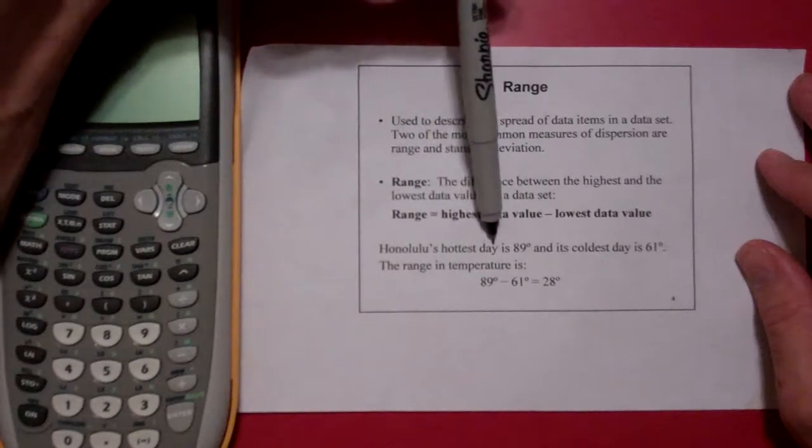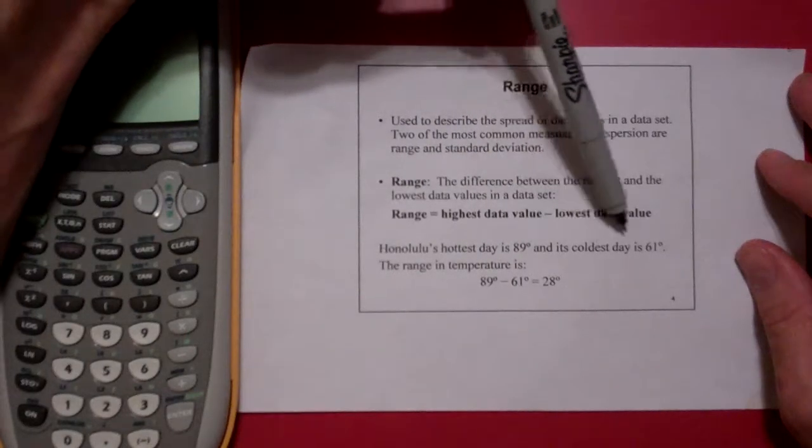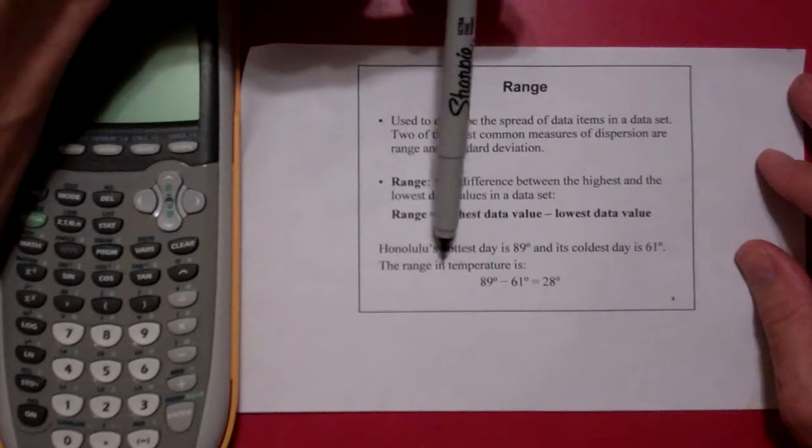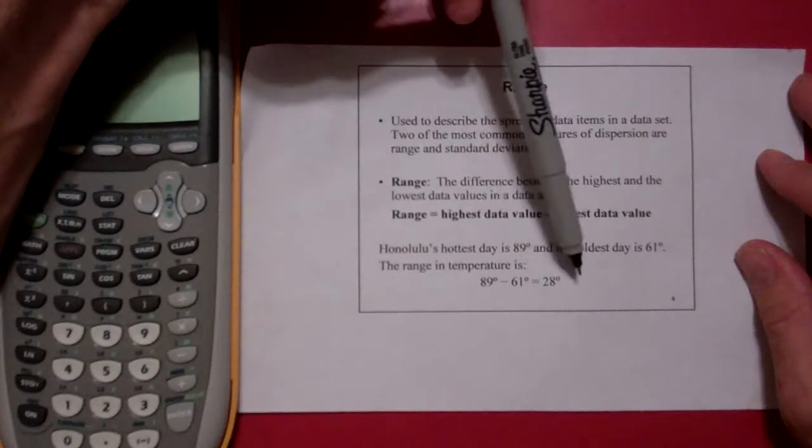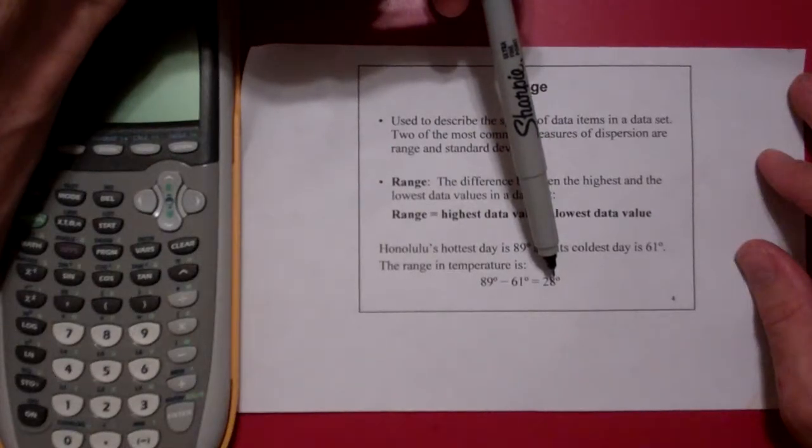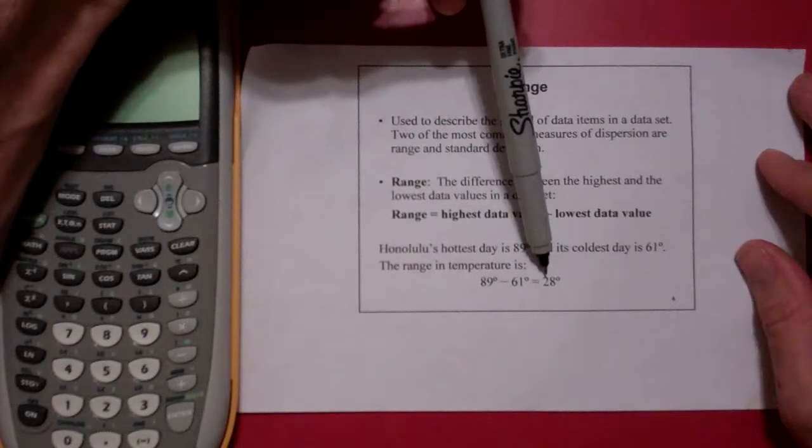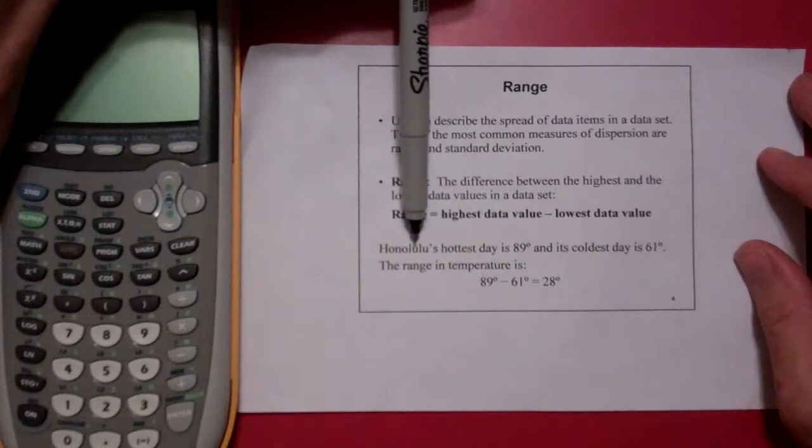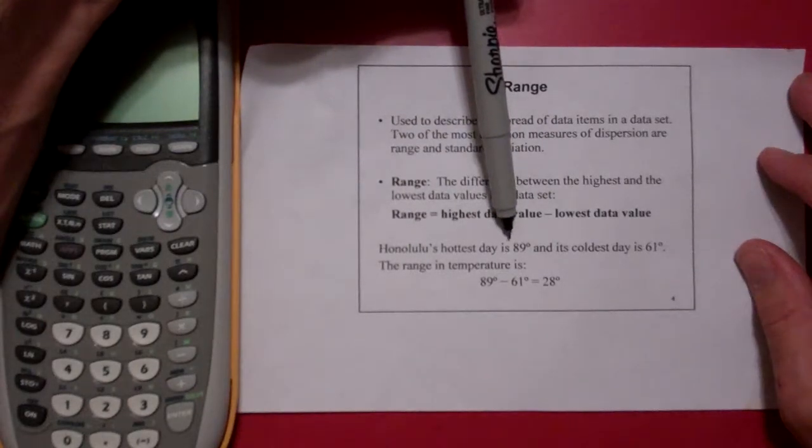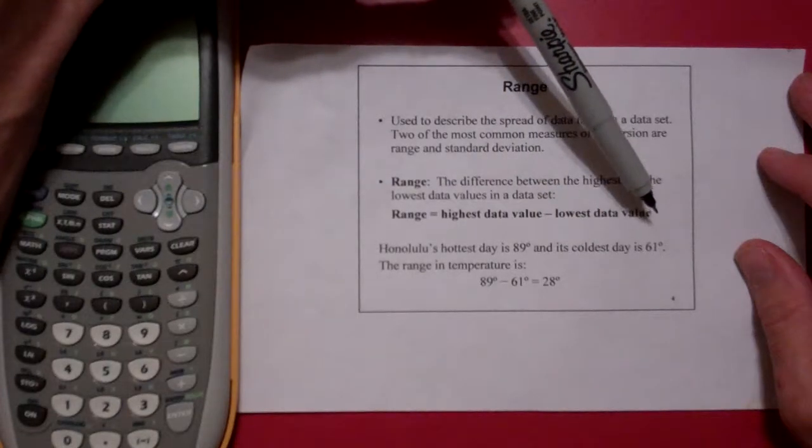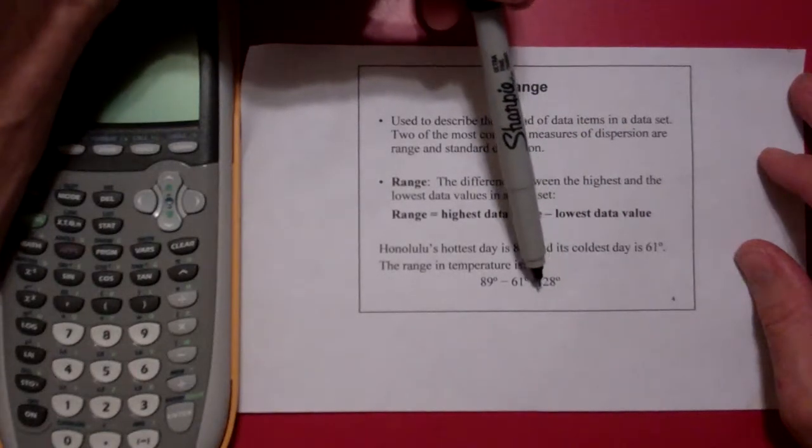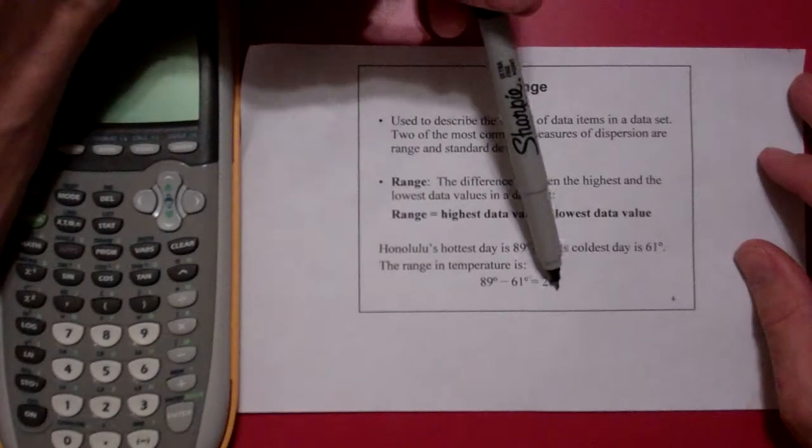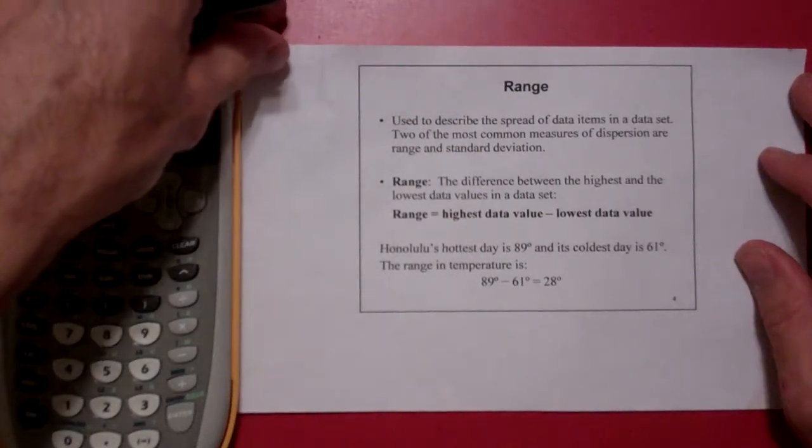So Honolulu's hottest day is 89 degrees and its coldest day is 61 degrees. So the range in temperature is 89 minus 61, which is 28 degrees. There's only a variation of about 28 degrees in the temperature on Honolulu. Whereas maybe Texas has the same average temperature but it gets up to 110 and down to 49, and so its range is maybe 50 degrees. So it has much greater variability than Honolulu's does because it's in the middle of the Pacific Ocean.